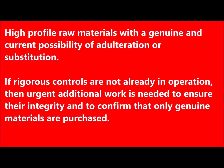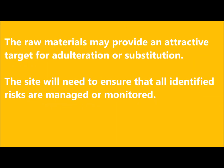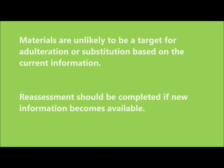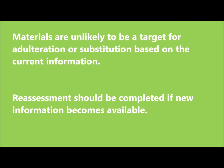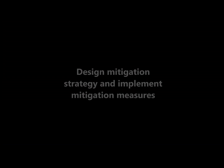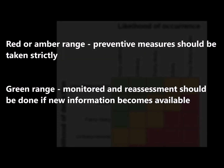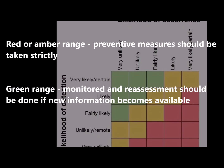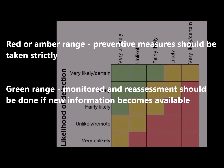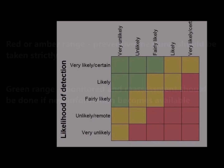Red: High-profile raw materials with a genuine and current possibility of adulteration or substitution. If rigorous controls are not already in operation, then urgent additional work is needed to ensure their integrity and confirm that only genuine materials are purchased. Amber: The raw materials may provide an attractive target for adulteration or substitution; the site will need to ensure that all identified risks are managed or monitored. Green: Materials are unlikely to be a target for adulteration or substitution based on current information; reassessment should be completed if new information becomes available. If the raw material falls in the red or amber range, preventive measures should be taken strictly, while materials in the green range must be monitored and reassessed if new information becomes available.